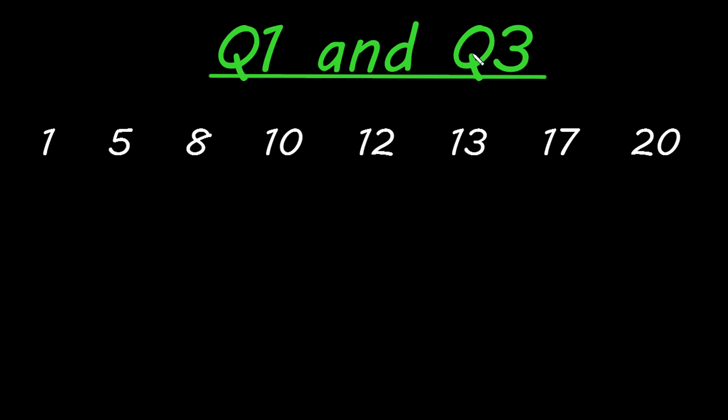Q3 would be the value where we have 75% of our data under that value. Likewise, you might hear something also called Q2, which is the median of our data. This is where we would have 50% of our data under this Q2 value. But mostly you hear about Q1 and Q3 because Q2 is just the median.